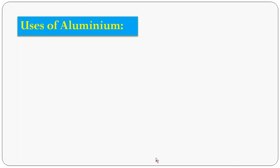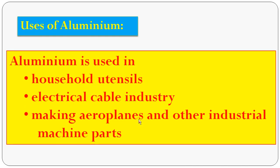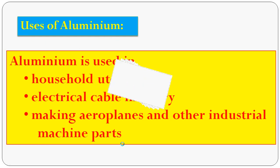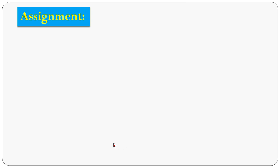Now, what are the uses of aluminum? Aluminum is used in household utensils, the electric cable industry, making aeroplanes, and other industrial machine parts. Aluminum alloys are also used in making aeroplane tools and various industrial applications. These are the uses of aluminum, along with the chemical properties discussed.